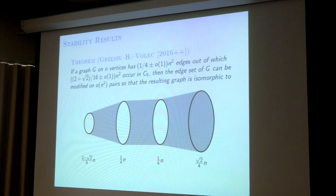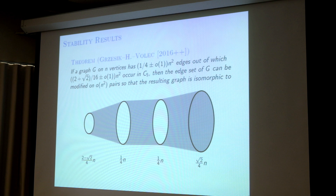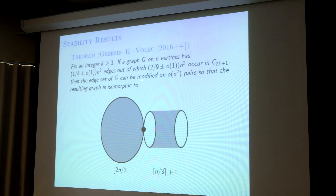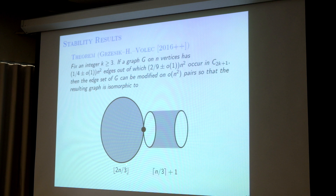We showed that if a graph G on n vertices has roughly n²/4 edges, and out of which roughly this number of edges occur in C5, then your graph G must look very similar to the counterexample or the extremal structure. By very similar I mean you can just add or remove a little bit of edges to make it look exactly like this. And the same is true for longer odd cycles: if a graph G on n vertices has roughly n²/4 edges and roughly 2/9 n² edges occurring in some odd cycle C_{2k+1}, then G is very close to a clique and complete bipartite graph of sizes 2n/3 and n/3.